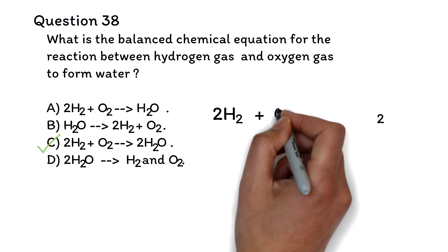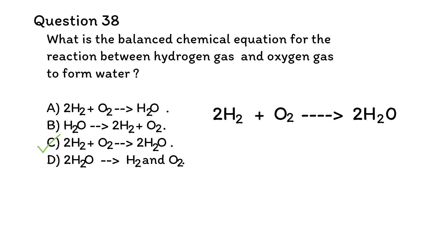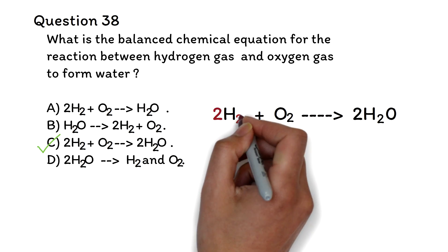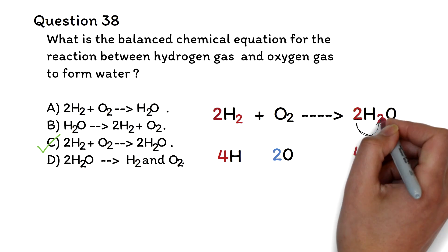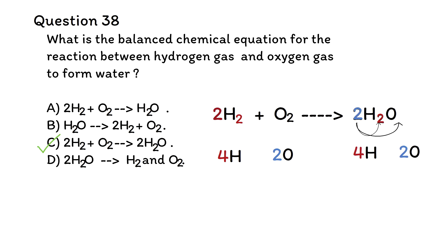2 molecules of hydrogen gas react with 1 molecule of oxygen gas to produce 2 molecules of water. Balancing equations is one of the most important things on the GED. We need equal numbers of atoms of each element on both sides of the equation. On the left side, there are 4 atoms of hydrogen (2 times 2) and 2 atoms of oxygen. On the right side, the coefficient 2 affects both hydrogen and oxygen, giving 4 hydrogen atoms and 2 oxygen atoms. The equation is balanced. Please go to UltimateGED.com to try more examples — this requires practice.